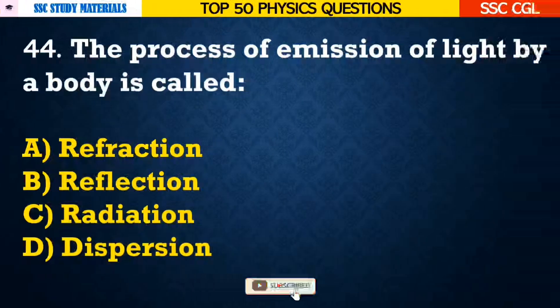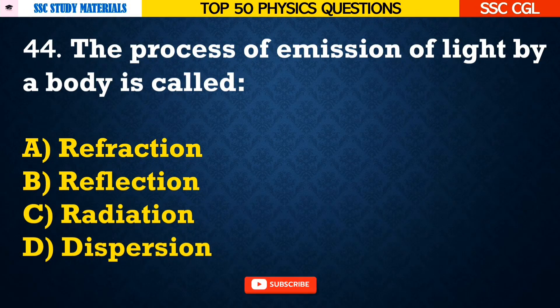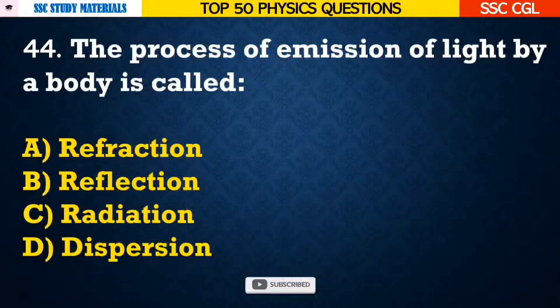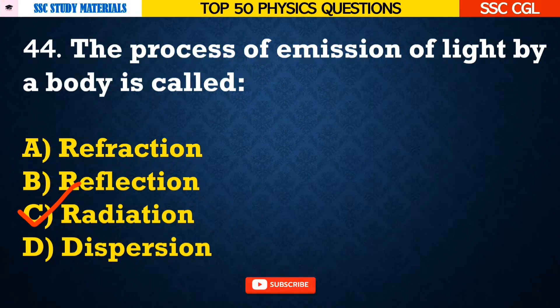Question number 44: The process of emission of light by a body is called — Answer C. It is called radiation.